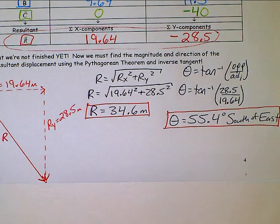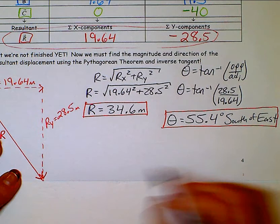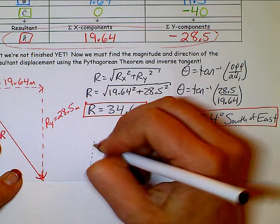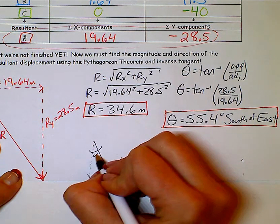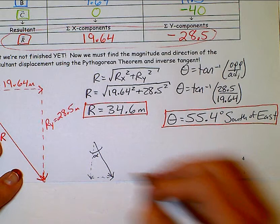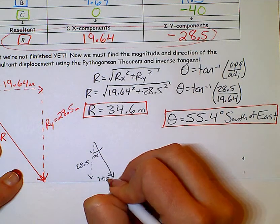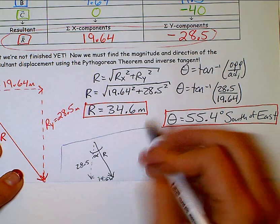On a side note, there's another correct response for the direction. If instead you decided to draw in your triangle, your resultant triangle, this way. I'll label this alpha so we don't get it mixed up with the theta. And this was your 28.5 and this was your 19.64.